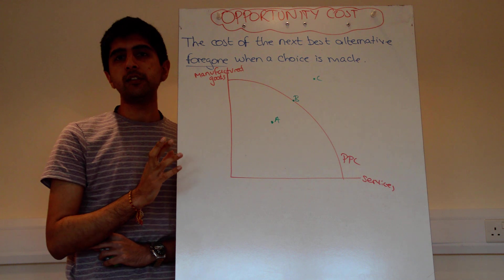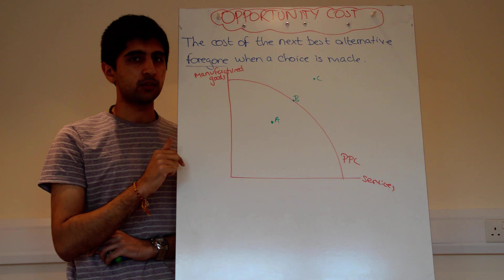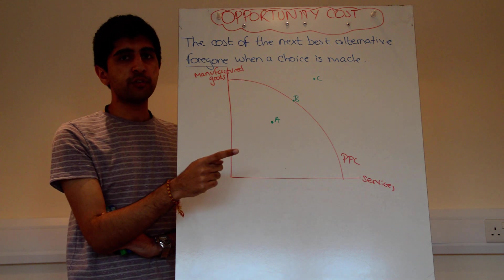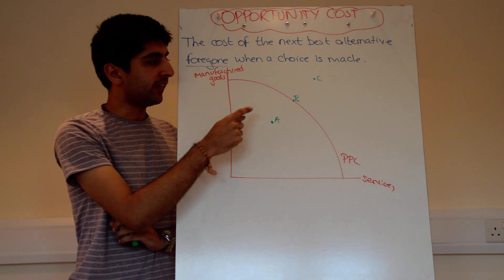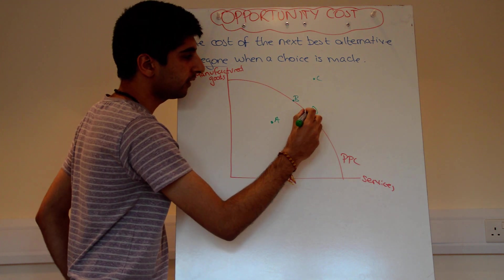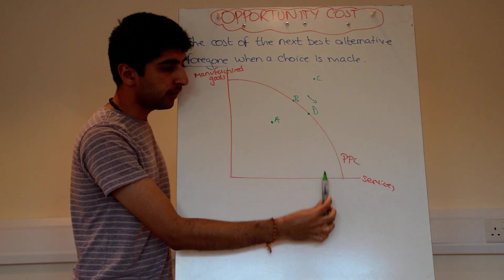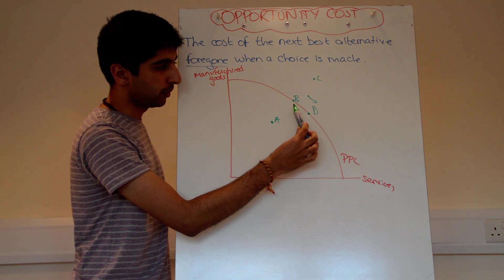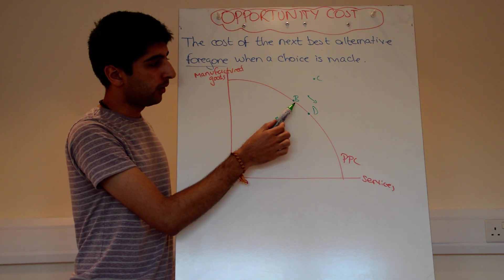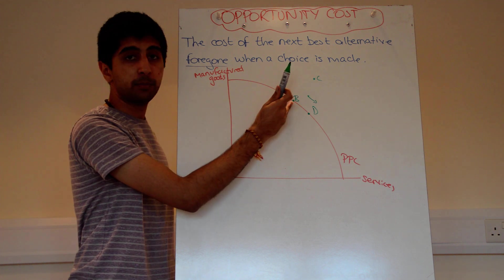Pareto efficiency occurs where nobody can be made better off without making somebody else worse off. So if we're at a point of production where we can only make somebody better off by making somebody else worse off, then that point of production must by definition be Pareto efficient. If the economy moves from point B to point D, people that consume services will be better off — more services will be produced — but less goods will be produced, so people that consume goods will be worse off. By definition, point B must be Pareto efficient.